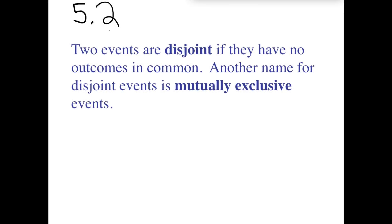Counting is one of the primary ways we calculate the probability of some event. There are a few more definitions we'll be working with. Here's the first one from section 5.2: the definition of disjoint events. Two events are called disjoint if they have no outcomes in common.